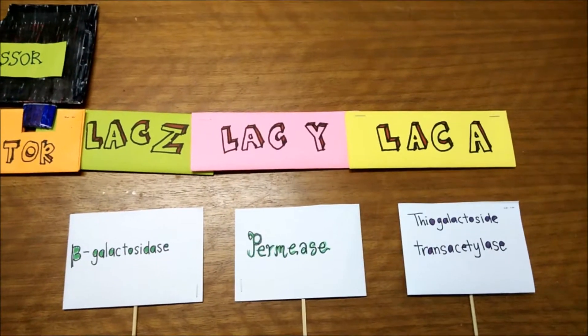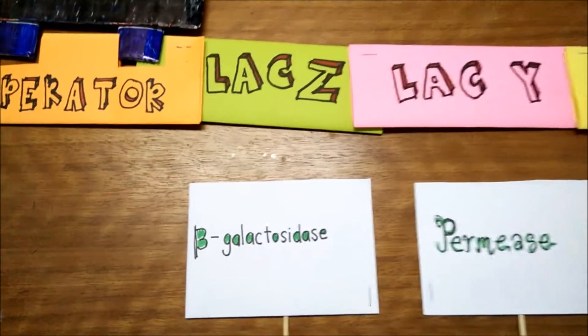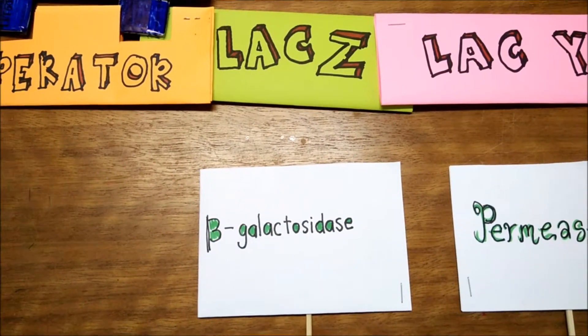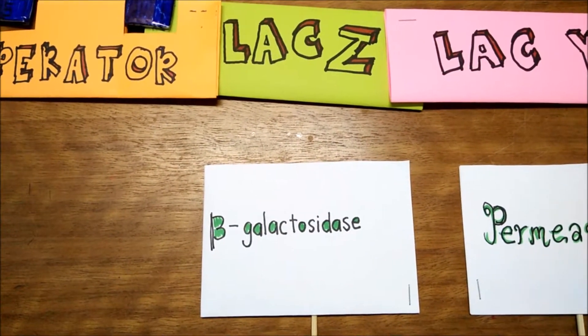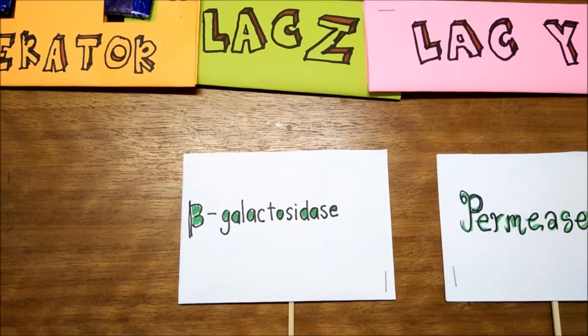And then the third one, we have structural genes. First structural gene is Lac Z. Lac Z is the beta-galactosidase. Beta-galactosidase is used to break down lactose.